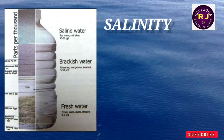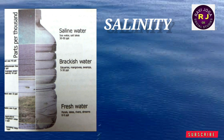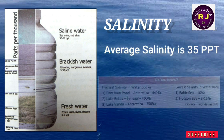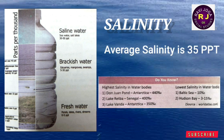Salinity is nothing but how much amount of salt is dissolved in sea water. It is calculated as the amount of salt in grams dissolved in one thousand grams of sea water. It is expressed as ppt, which means parts per thousand. The average salinity of the oceans is 35 ppt.